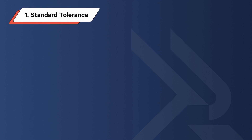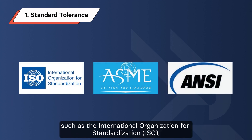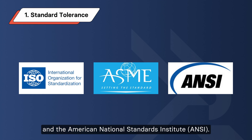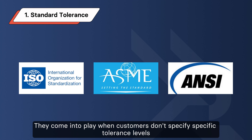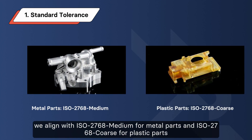First: Standard tolerance. Standard tolerance is usually set by various international standards bodies such as the International Organization for Standardization, the American Society of Mechanical Engineers, and the American National Standards Institute. They come into play when customers don't give specific tolerance levels. At Rapid Direct, we align with ISO 2768 medium for metal parts and ISO 2768 coarse for plastic parts.